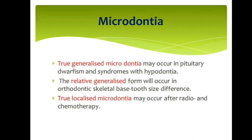Generalized microdontia may occur in pituitary dwarfism — in cases where patients are short — and in syndromes with hypodontia. Relative generalized microdontia can occur in orthodontic skeletal-based tooth size discrepancies. Localized microdontia may occur after radiotherapy or chemotherapy.